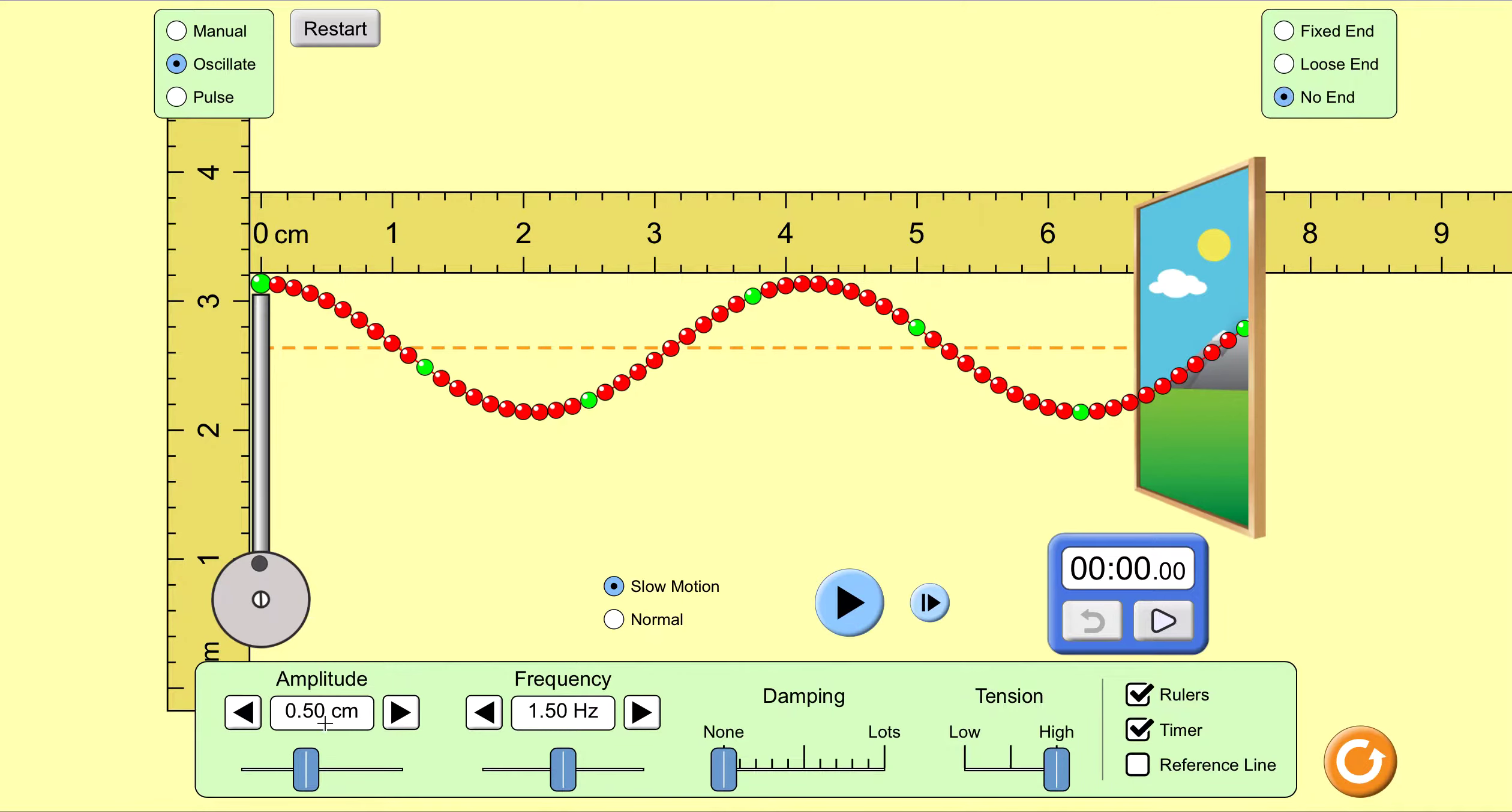Set the amplitude to 0.5 centimeters, the frequency to 1.5 centimeters. Turn damping to none, tension is high. I've turned on the rulers and the timer.